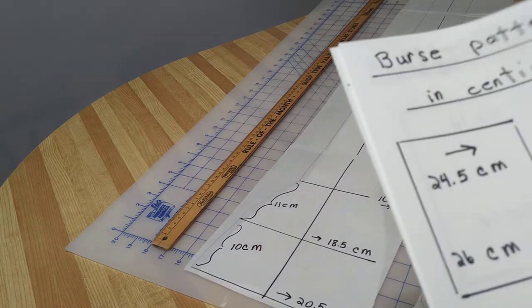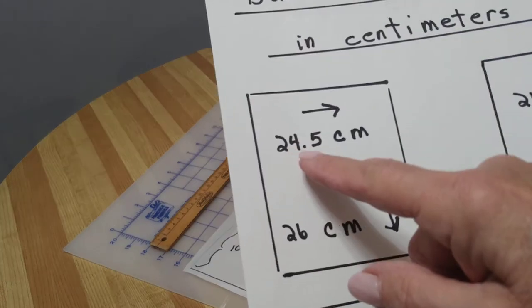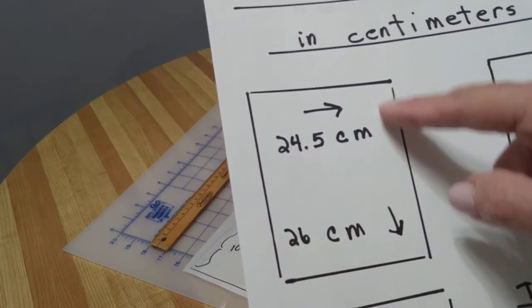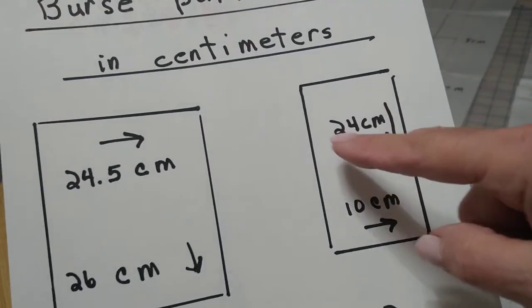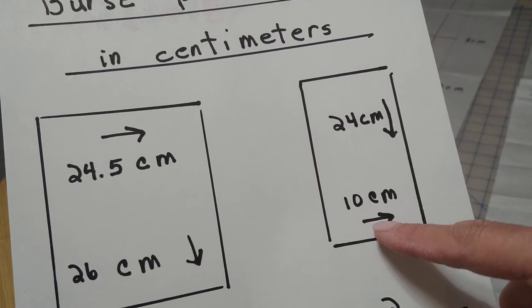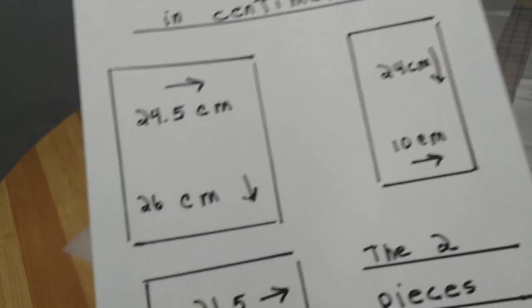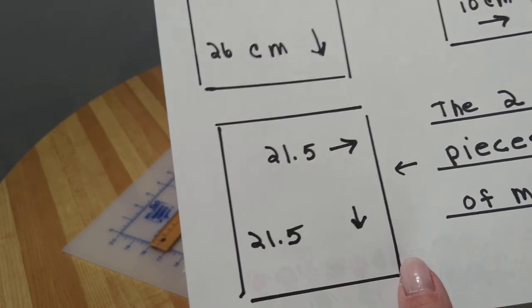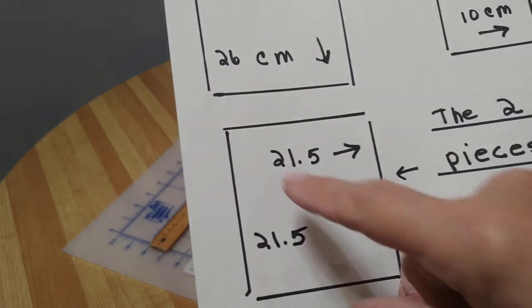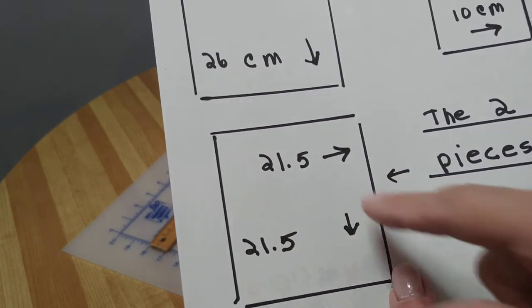The burse pattern in centimeters is 24.5 centimeters across and 26 centimeters down. The other piece is 24 centimeters down and 10 centimeters across. The one for the matting that goes inside the burse is 21.5 down and across.